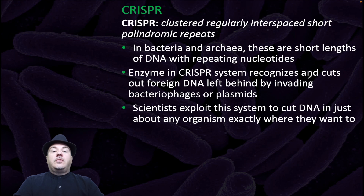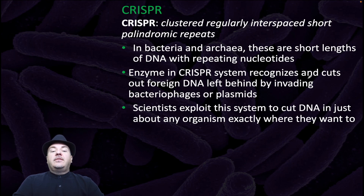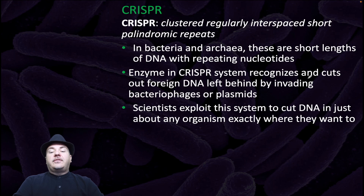CRISPR, or Clustered Regulatory Interspace Short Palindromic Repeats — in bacteria and archaea, these are short lengths of DNA with repeating nucleotides. Enzymes in the CRISPR system recognize and cut out foreign DNA left behind by invading bacteriophages or plasmids. Scientists exploit this system to cut DNA in just about any organism exactly where they want.